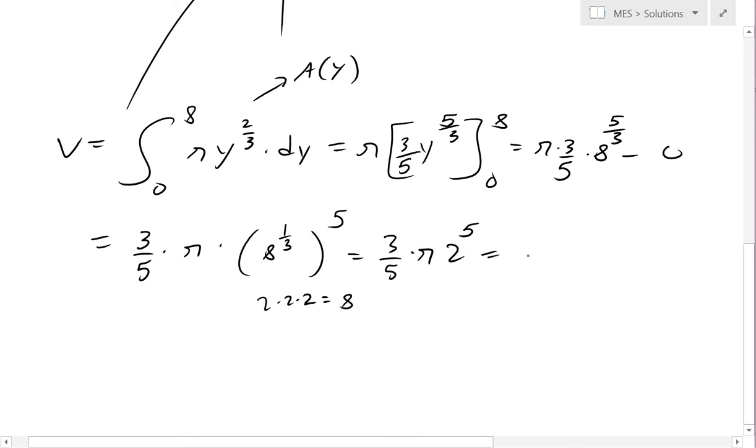So this equals pi over 5, and then this is going to be 3 times 32. 3 times 32, that's 96. So we have 96 pi over 5 as our answer.